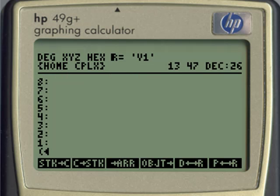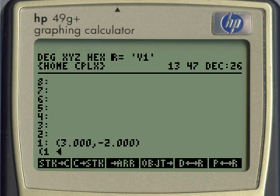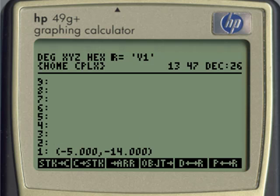Now, we do that in the calculator. Round parenthesis, 3, space 2, change sign, enter. That is the first factor. And now, the second one. Round parenthesis, 1, space 4, change sign. Those are the two numbers. Multiply them, and the result is, as we saw before, real part, negative 5, imaginary part, negative 14.